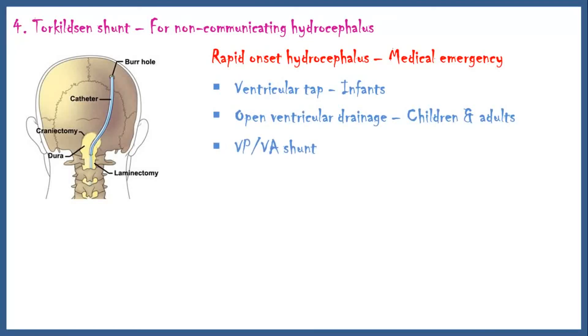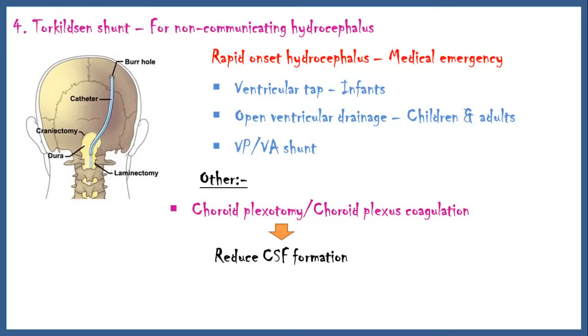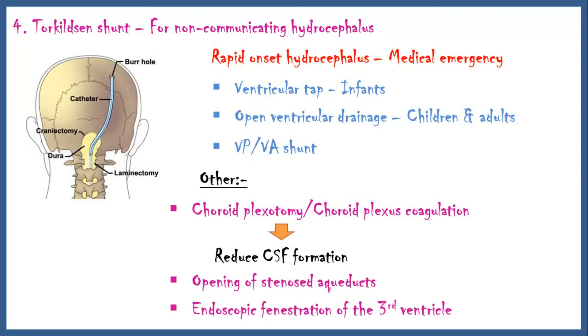Other methods of treating hydrocephalus include choroid plexectomy or choroid plexus coagulation to reduce CSF formation, opening of stenosed aqueducts, and endoscopic fenestration of the third ventricle.